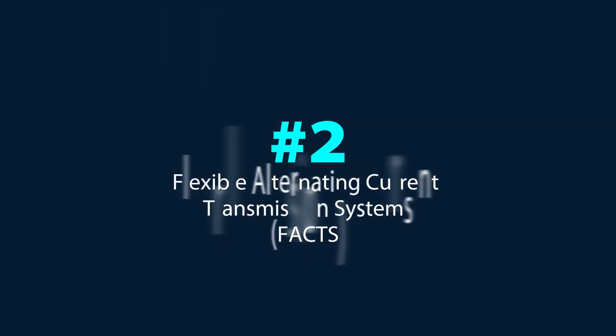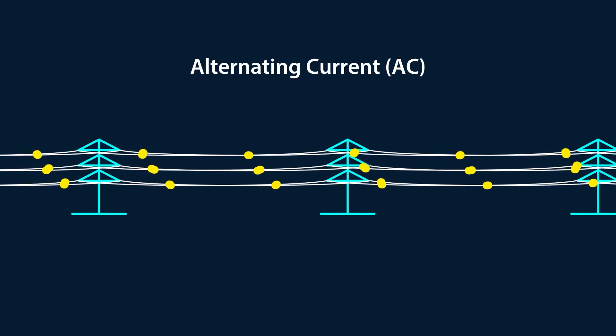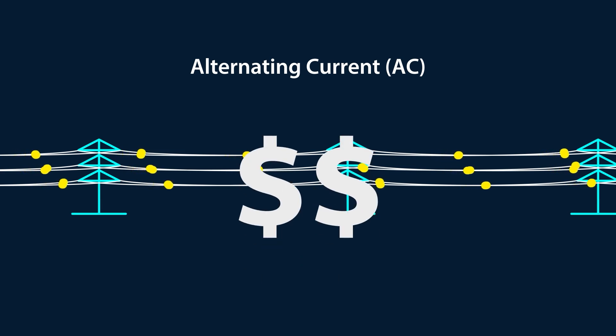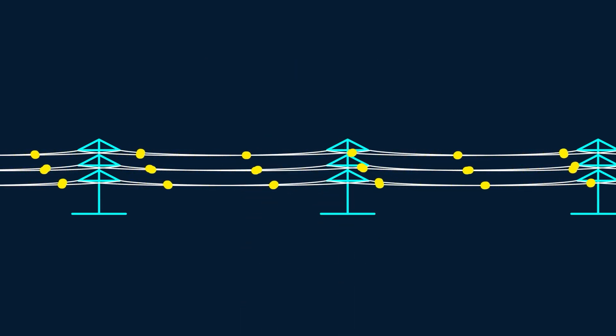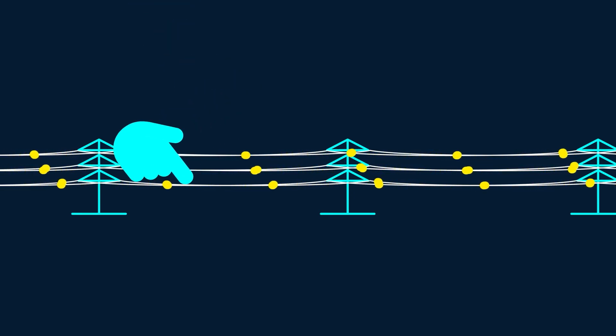Option two is to retrofit existing transmission or build new transmission with devices called flexible alternating current transmission systems or FACTS. Almost all power lines use alternating current or AC, which has historically been the most cost-effective way of generating and transmitting electricity. But grid operators can't actually tell electricity where to go on AC power lines.